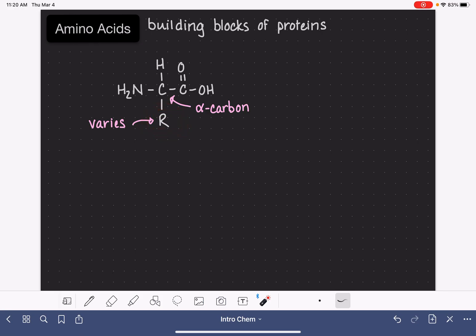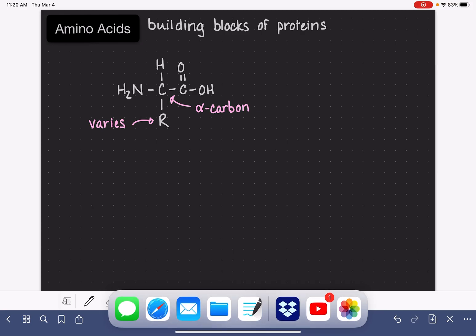There are 20 amino acids that are found in nature. And it's a good idea for you to find a table of all of these amino acids that shows those R groups for each amino acid. You can have that handy as a reference.